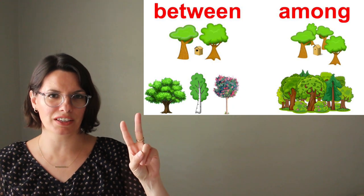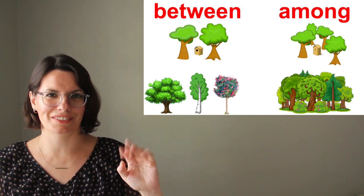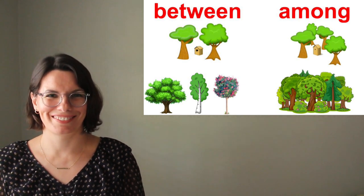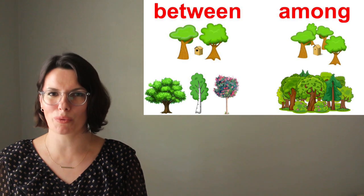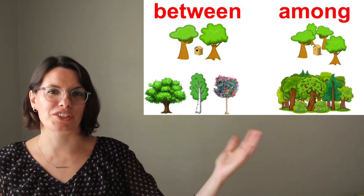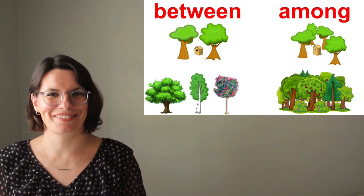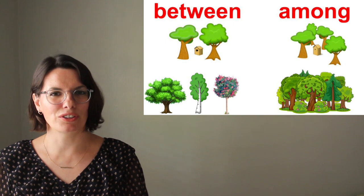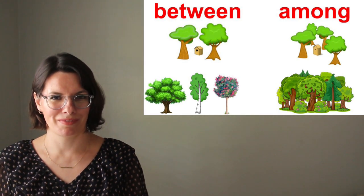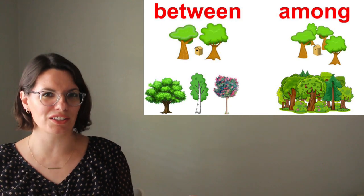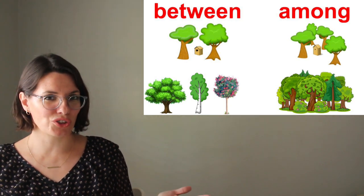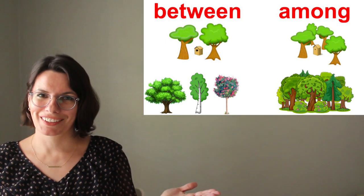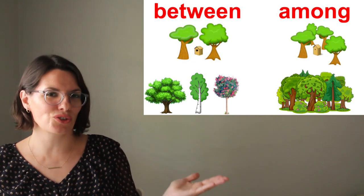You can use between with two things or more than two things. The birdhouse is between the two trees. Among is always used with more than two things — there is a birdhouse among the trees. But you can also use between with more than two things when you talk about specific things. Among all those trees, I like only these three: the oak tree, the birch tree, and the crepe myrtle tree. I can buy only one tree, so I need to choose between these three trees.